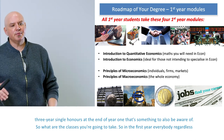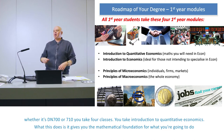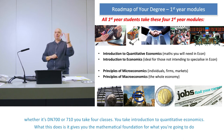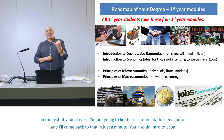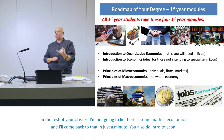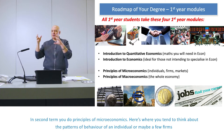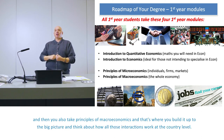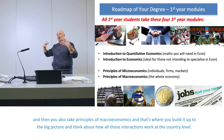In the first year, everybody — whether DN700 or DN710 — takes four classes: Introduction to Quantitative Economics, which gives you the mathematical foundation for the rest of your classes; Introduction to Economics; Principles of Microeconomics in second term, where you think about patterns of behavior of an individual or a few firms; and Principles of Macroeconomics, where you build up to the big picture and think about how all those interactions work at the country level.